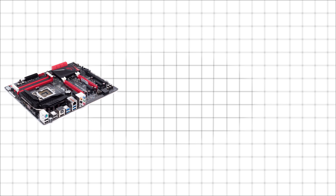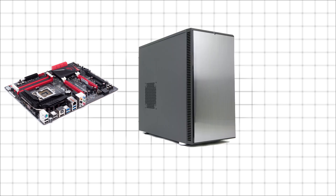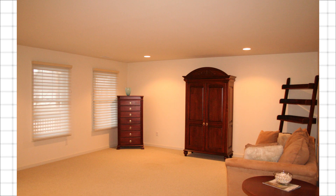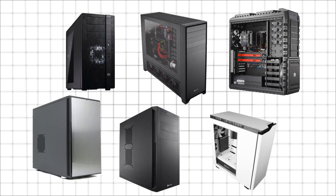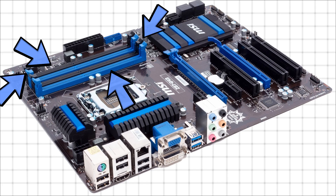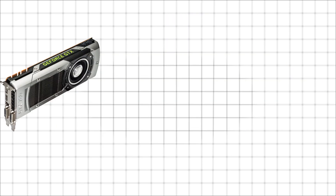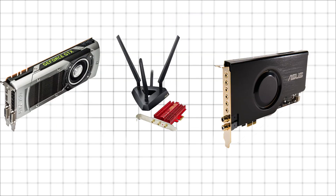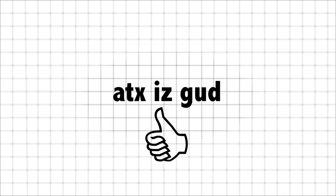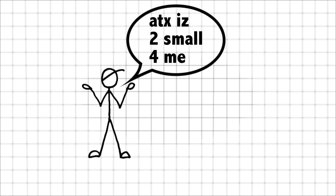ATX motherboards are good for most desktop systems where space isn't a huge issue. They're designed to fit in most tower-sized cases and usually offer four RAM slots. They often include many expansion slots to fit graphics cards, WiFi cards, sound cards, and much more. For the average desktop user, this is the form factor of choice.